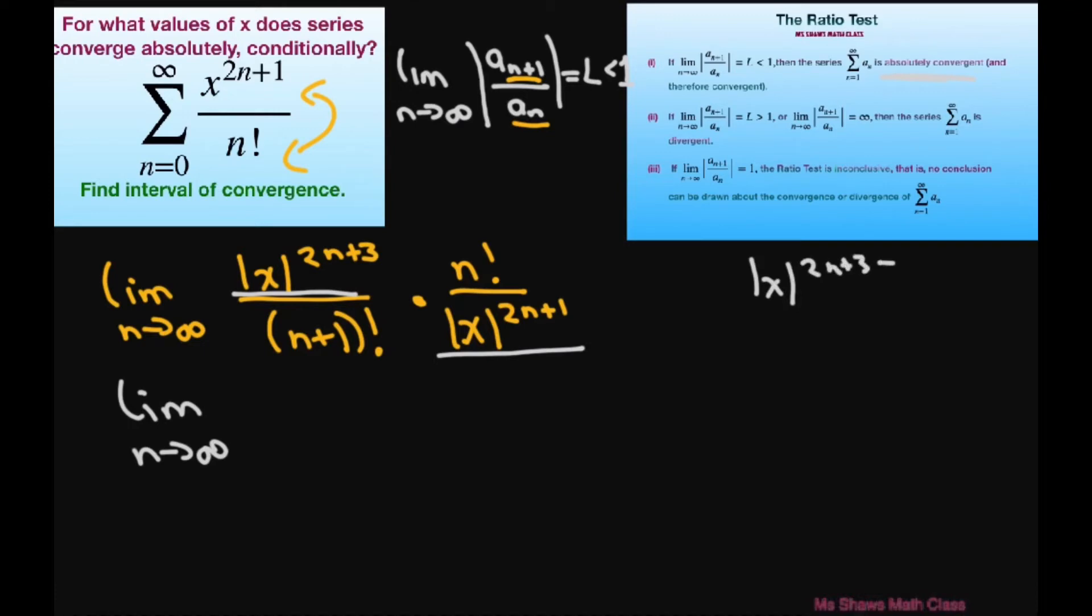Let's group these two together. This is just going to be absolute value of x to the power of 2n plus 3 minus 2n plus 1, so these cancel and so this is absolute value of x squared.